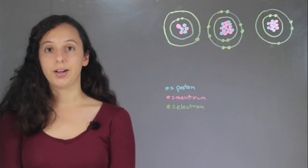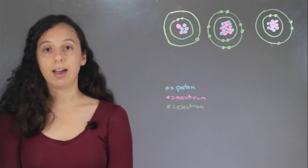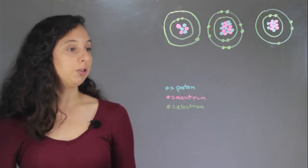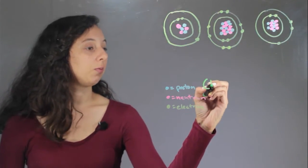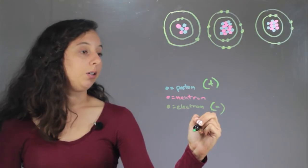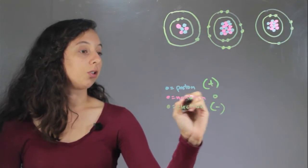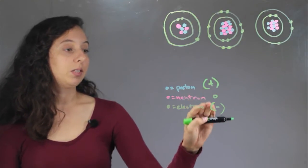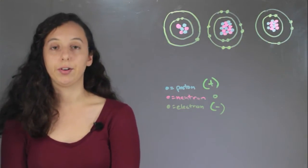An ion is basically just an atom that doesn't have the same number of protons as electrons and because a proton has a charge of positive one and an electron has a charge of negative one and neutron is nothing, then it means that if you don't have the same number of each one you're going to have an overall charge.